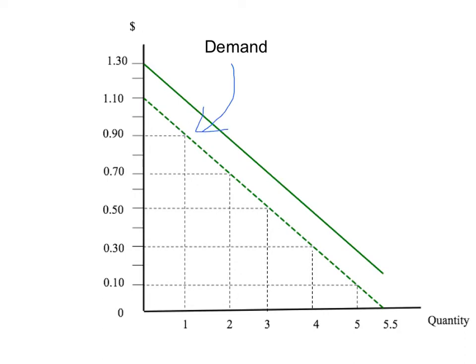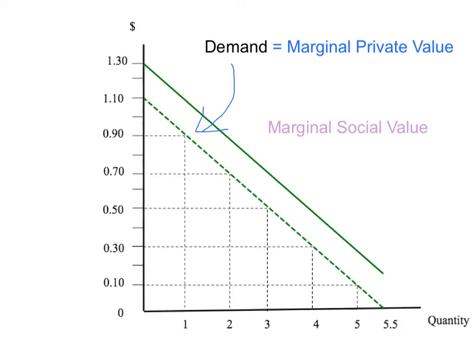We have Sam's private demand curve for squirts of deodorant, given by the dotted green line. Sam's demand curve is also his marginal private value curve for deodorant, so the height of the demand curve tells us the extra benefit Sam gets from an extra squirt. But because there's an externality, Sam's marginal private value isn't the only value created from a squirt of deodorant — whenever Sam squirts deodorant, he creates an extra 20 cents of benefit to his co-workers. That's the positive externality. So we have the marginal social value curve, which lies exactly 20 cents above the marginal private value curve, and that gap represents the size of the positive externality on each extra squirt of deodorant.